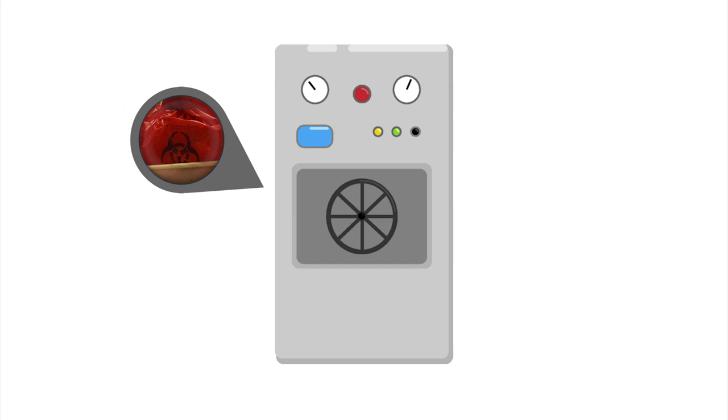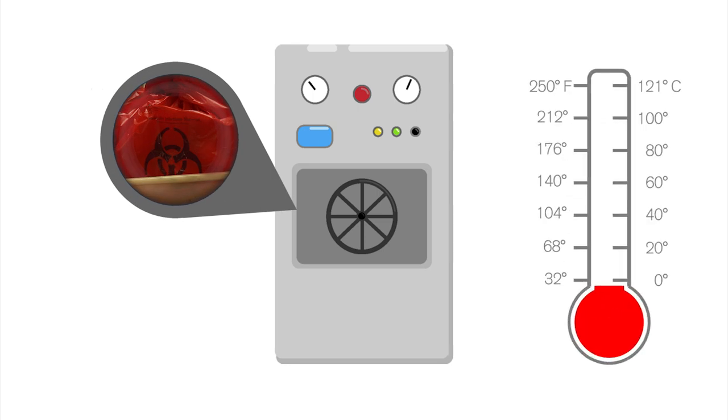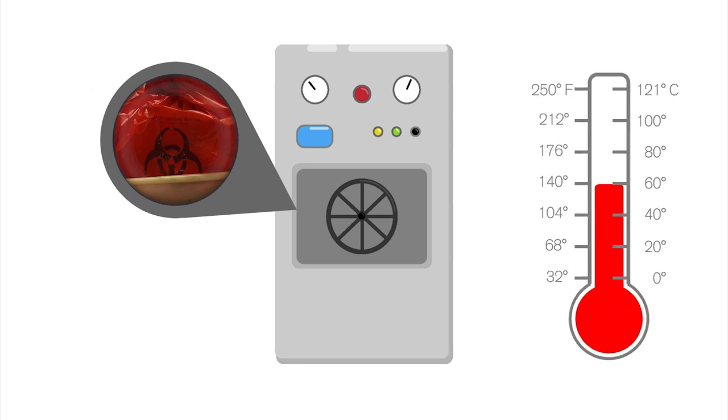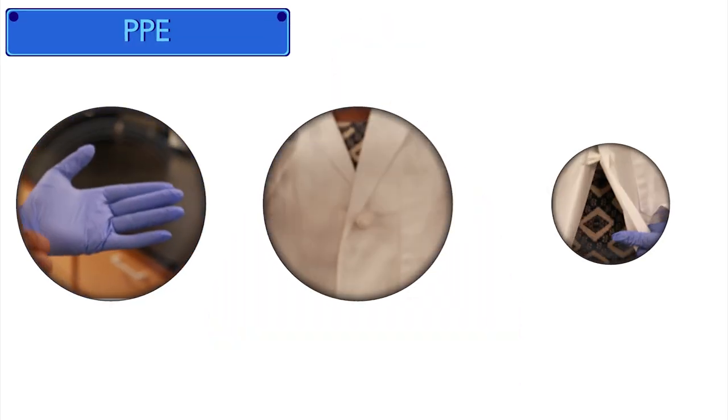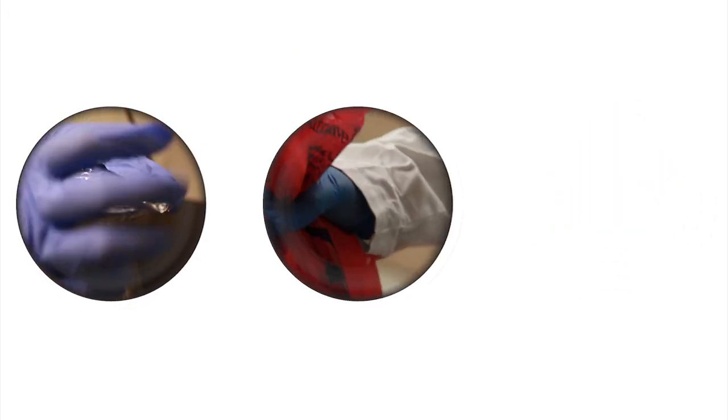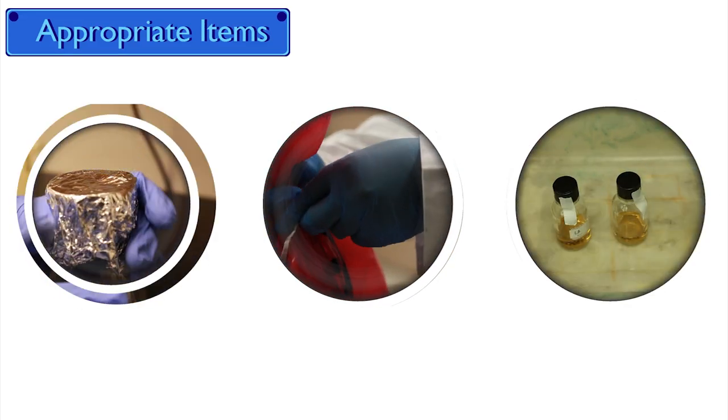When items are autoclaved, things are going to get really hot, to almost 250 degrees Fahrenheit, and become highly pressurized, causing safety hazards. You need to make sure you know how to properly use the autoclave. This includes knowing what personal protective equipment you need to wear, and to determine which items can be autoclaved, and how to do it right.